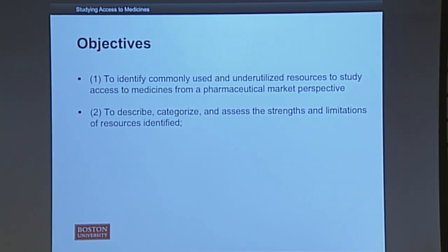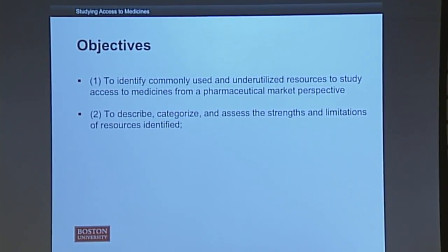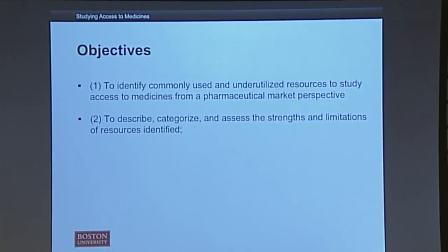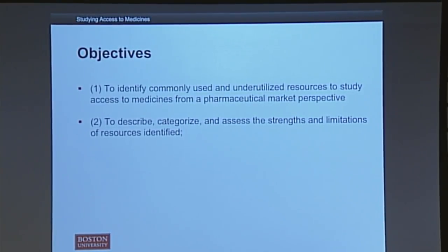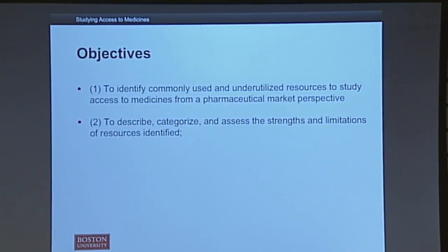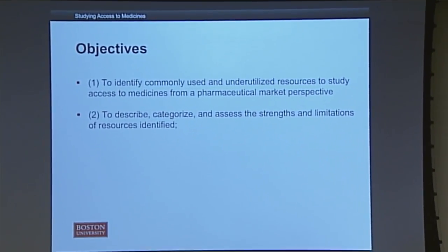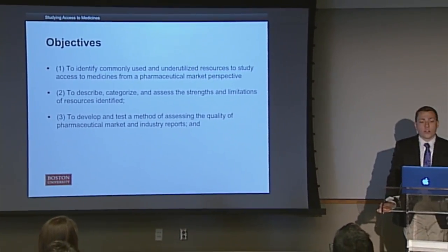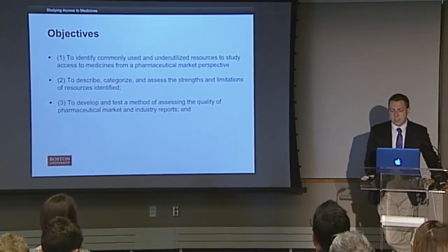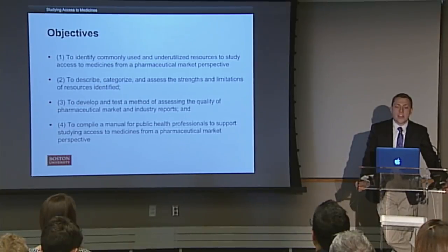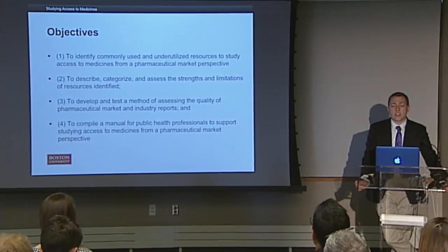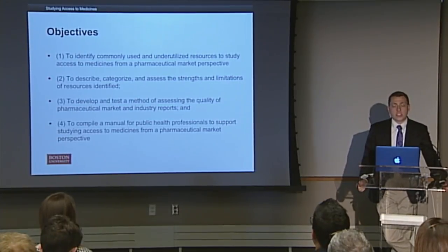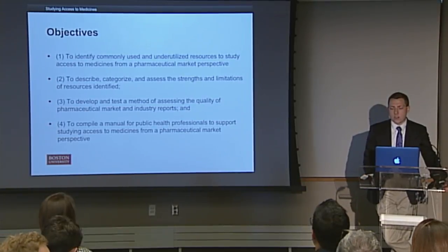From there I took these resources that we identified and categorized them into three groups: market resources, trade resources, and public health resources, and then assessed the strengths and limitations of each — kind of a big long annotated bibliography. When looking at the market resources specifically, we saw there were many limitations to the content and quality of pharmaceutical market and industry reports in studying access to medicines. So we decided to develop and test a method of assessing their quality. Finally, we compiled a manual for public health professionals interested in access to medicines, either in developing policies and understanding local problems, or on a more global scale for research, to help guide them on resources they could use as well as how to assess quality.